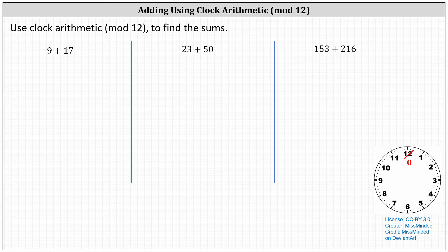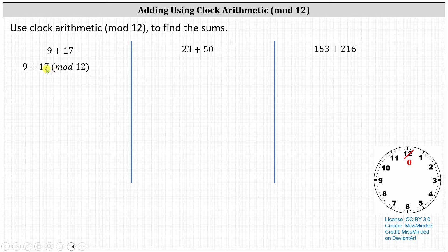We're asked to use clock arithmetic or mod 12 arithmetic to find the sums. First, we have 9 plus 17. To indicate we're adding using clock arithmetic or mod 12, we should write this as 9 plus 17 mod 12, where the mod 12 applies to both the 9 and the 17. We can also write this as 9 mod 12 plus 17 mod 12.